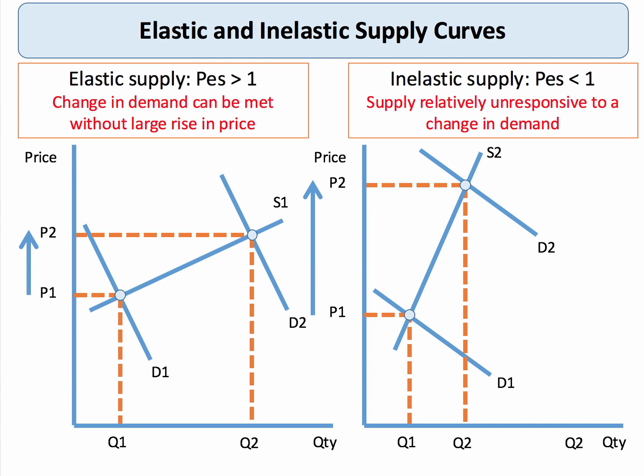In contrast, the diagram on the left-hand side shows that for a big increase in demand, supply is much more responsive — much more elastic — and therefore quantity can increase with only a relatively small increase in price.